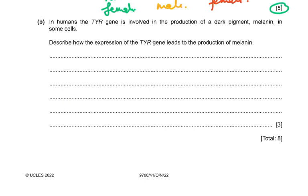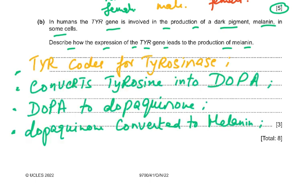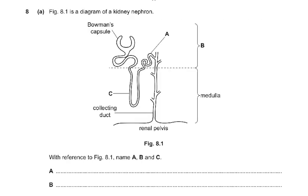In humans, the TYR gene is involved in the production of the dark pigment melanin. The TYR gene codes for tyrosinase, which converts tyrosine into DOPA. DOPA is then converted into DOPA quinone, and DOPA quinone is converted into melanin. This is factual material covered in class and should be straightforward to answer correctly.